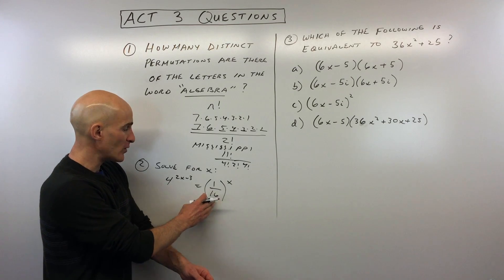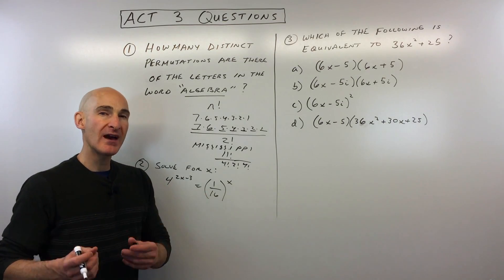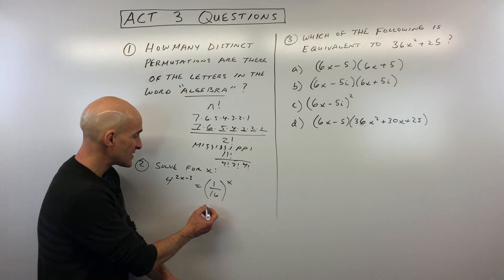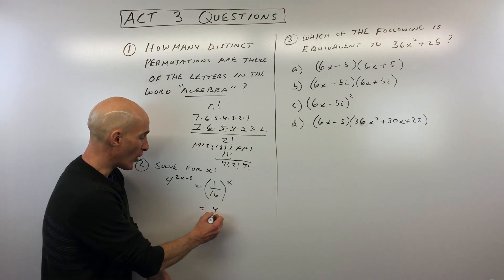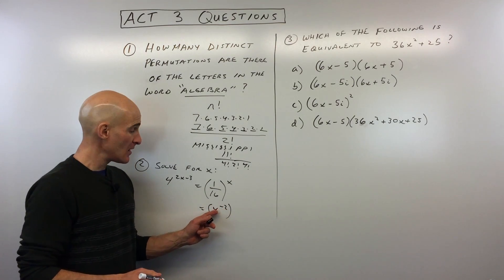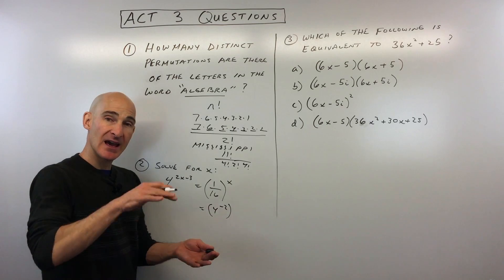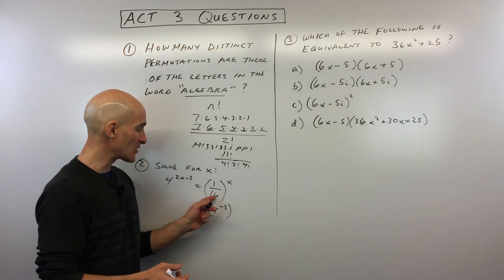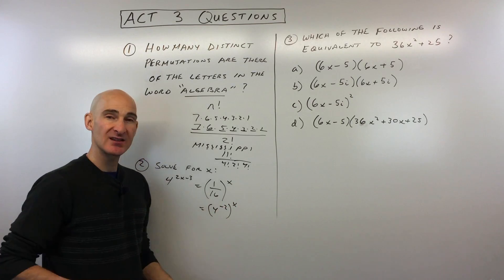So in this case, when we look at four and we look at one sixteenth, what do they have in common? Well, we can do this a couple different ways, but one sixteenth is really like four to the negative two. Now why negative? Well, four squared is 16, but that negative exponent tells us to take the reciprocal, flip it over. So that's how we get the one sixteenth, and it's all raised to the X power.